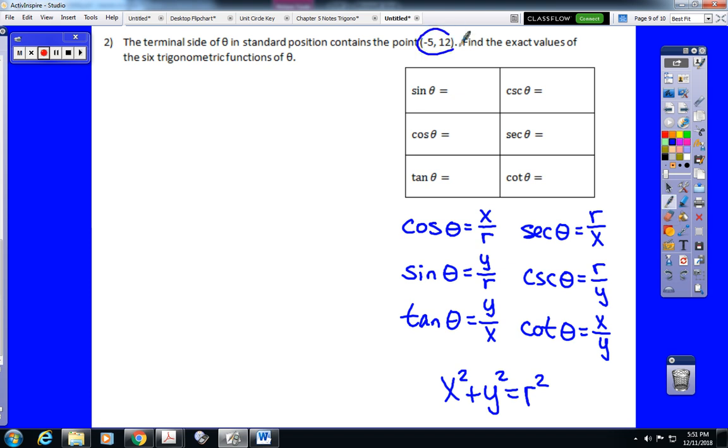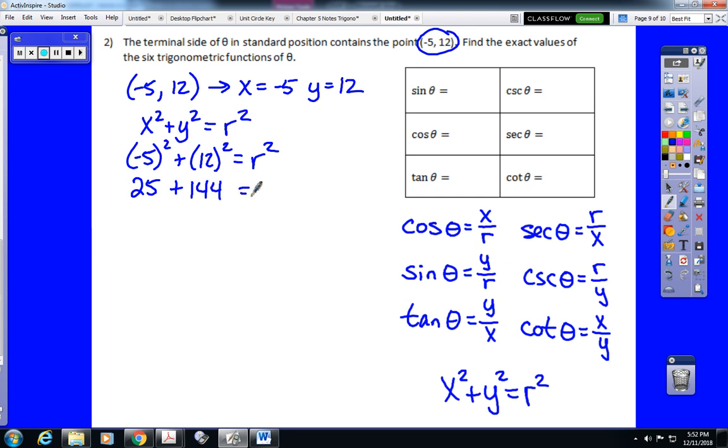What we're going to do is we're going to take this point, negative 5, 12. That tells us that x is negative 5 and y is 12. x squared plus y squared equals r squared. So negative 5 squared plus 12 squared equals r squared. And we're going to solve for r. 25 plus 144 is r squared. That would be 169 equals r squared. And then we take the square root. The square root of 169 would imply that r is 13. And again, we don't need to worry about the plus or minus that's there algebraically because r is always positive.